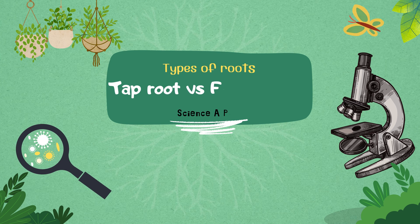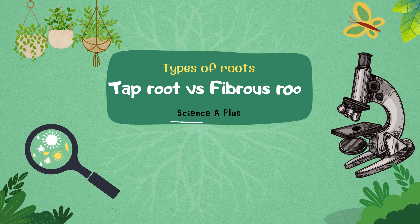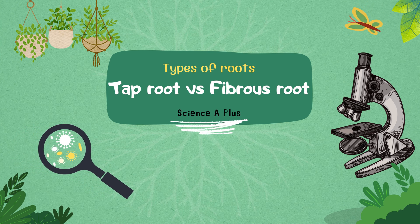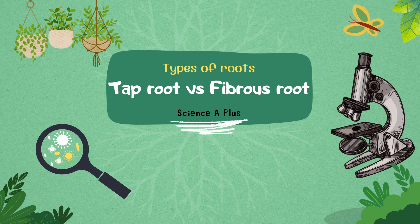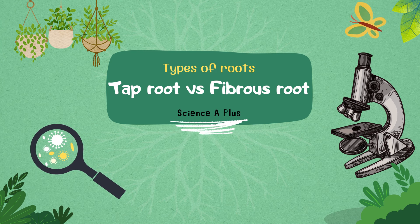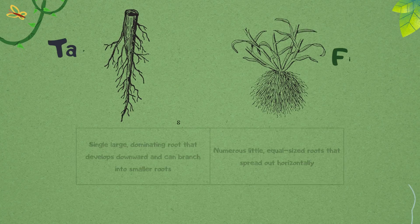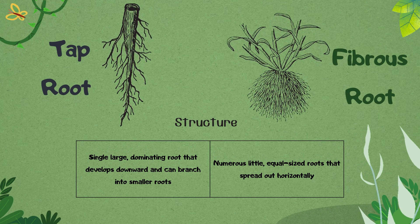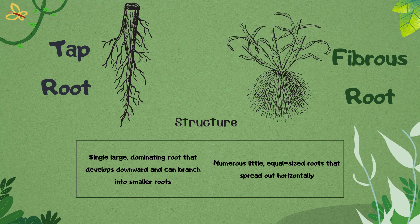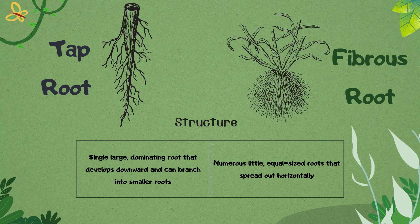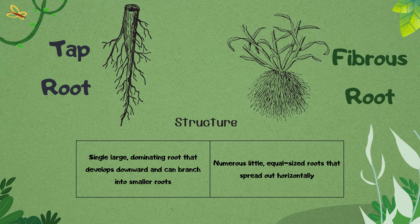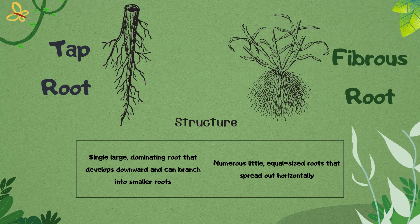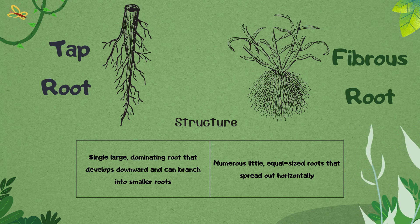Differences between taproot and fibrous root. Taproots and fibrous roots are two forms of root systems found in plants, each with its own set of characteristics. Taproots have a single large, dominating root that develops downward and can branch into smaller roots, whereas fibrous roots contain numerous little, equal-sized roots that spread out horizontally.